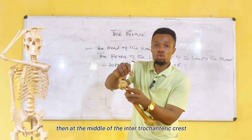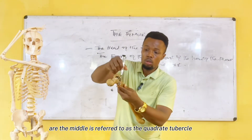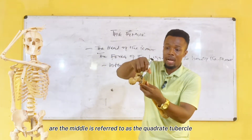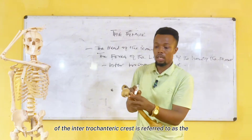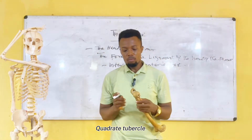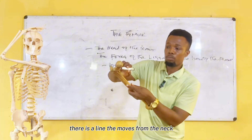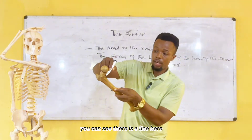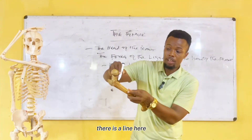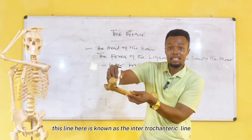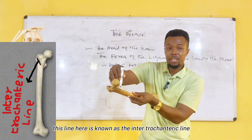At the middle of the intertrochanteric crest, there is a protrusion. This protrusion at the middle is referred to as the quadrate tubercle. There is also a line that moves from the neck of the femur down — this line is known as the intertrochanteric line.